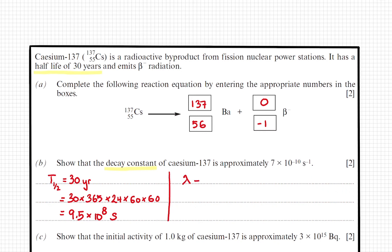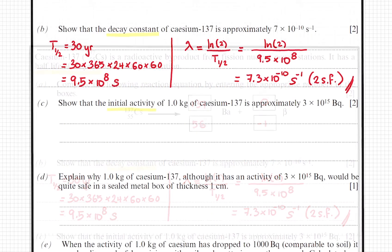The decay constant is equal to natural log of 2 divided by half-life. Substituting the numbers in, that gives us 7.3 times 10 to the power of minus 10 seconds to the minus 1. And always quote at least one more significant figure than what's given in the question if we're asked to prove something.